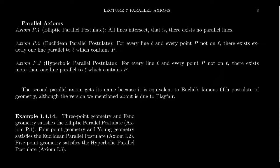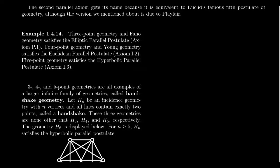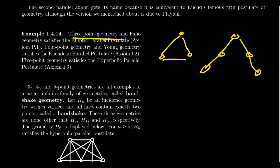Let me give some examples of geometries that satisfy these parallel alternatives. Three-point geometry satisfies the elliptic parallel postulate — all lines intersect each other; that was actually one of the axioms of three-point geometry. Fano geometry, which looks like the Deathly Hallows with three Elder Wands, also satisfies the elliptic parallel postulate — all lines intersect each other; that was Axiom 5.